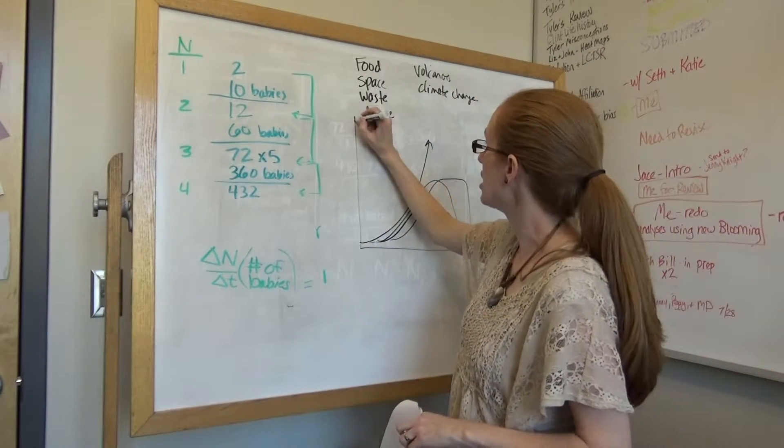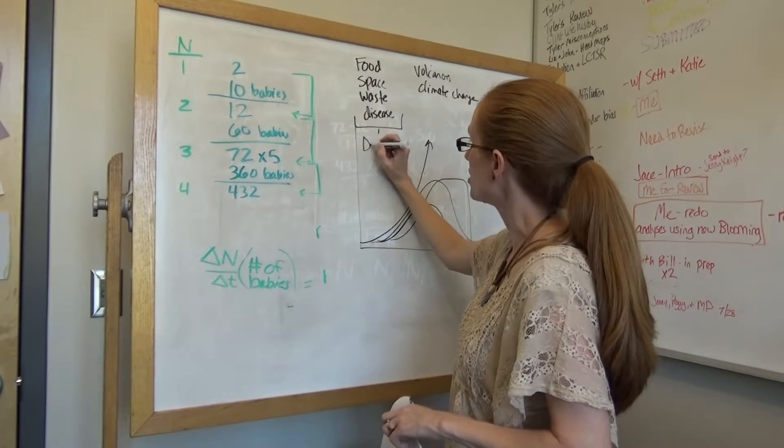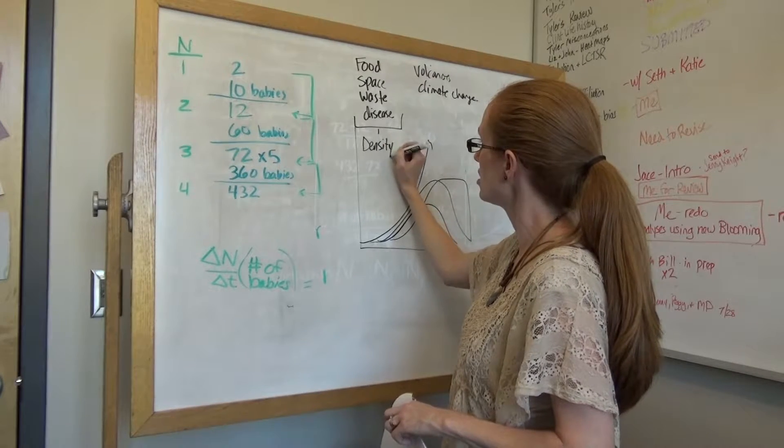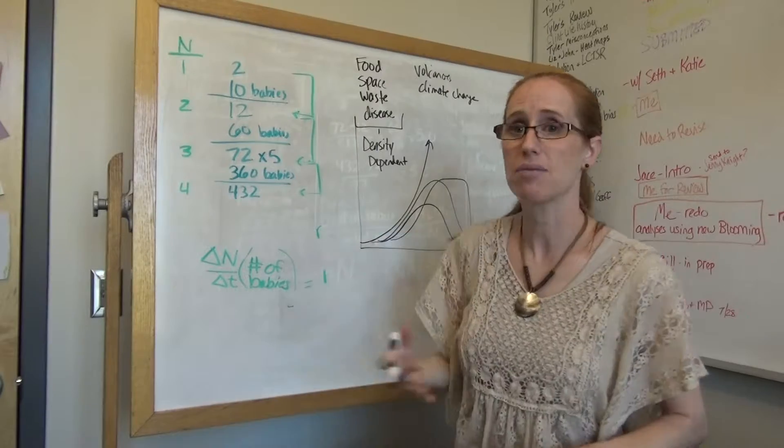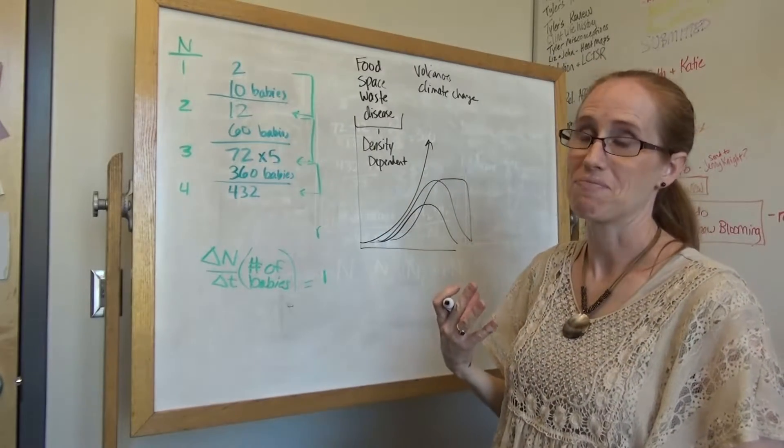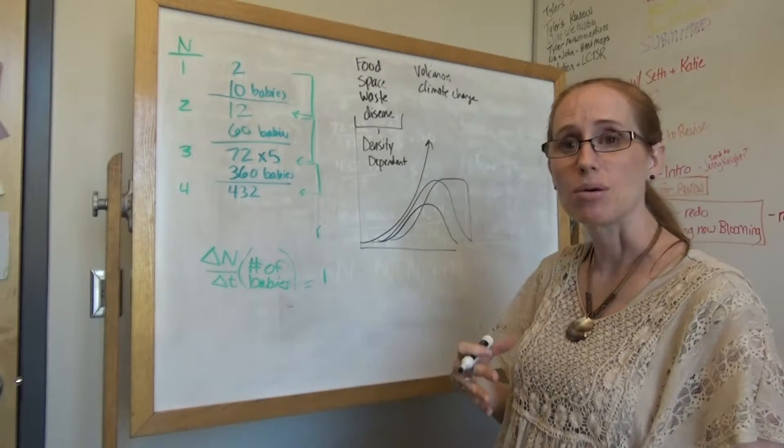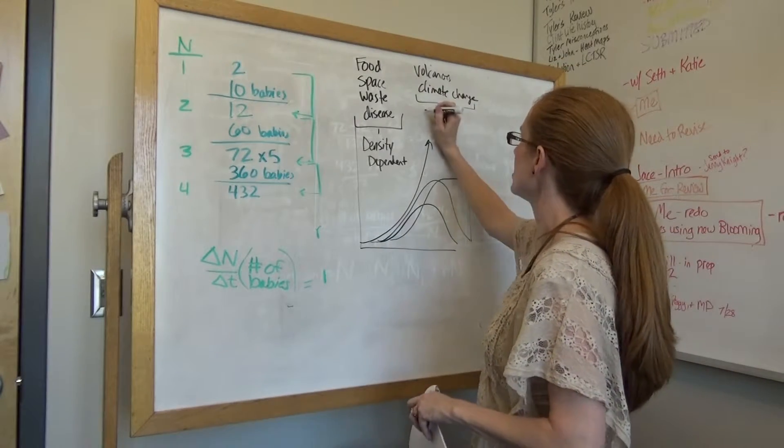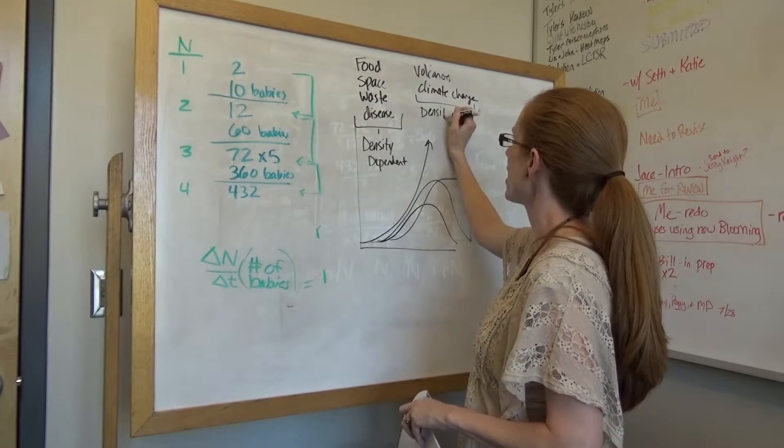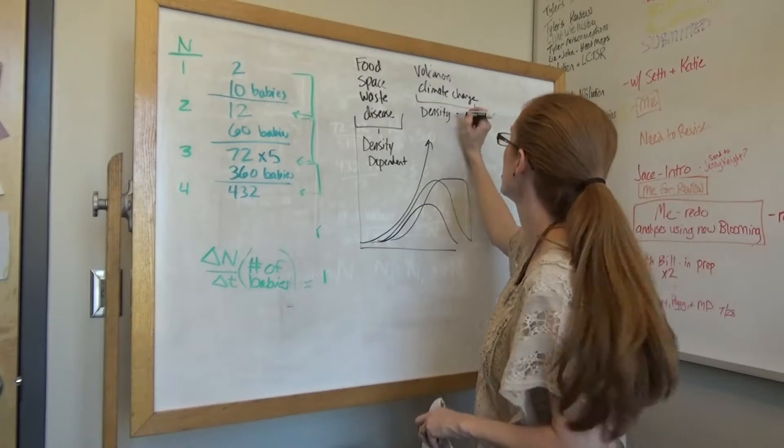And so these types of things are density dependent, meaning that they play more of a role in limiting the population the larger the density gets, whereas these kinds of things are density independent. It doesn't matter how big the population size is, because they're just going to limit it.